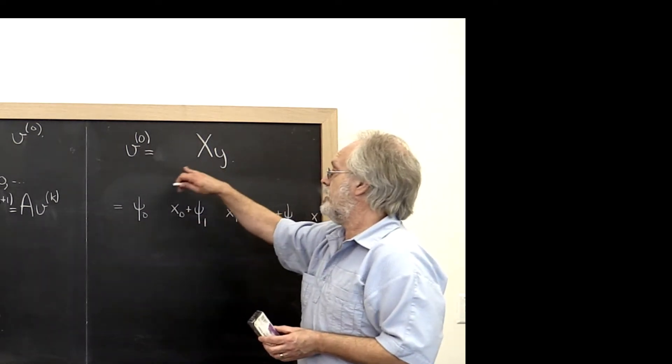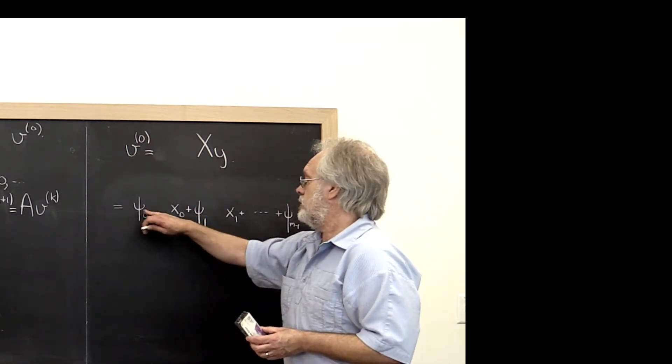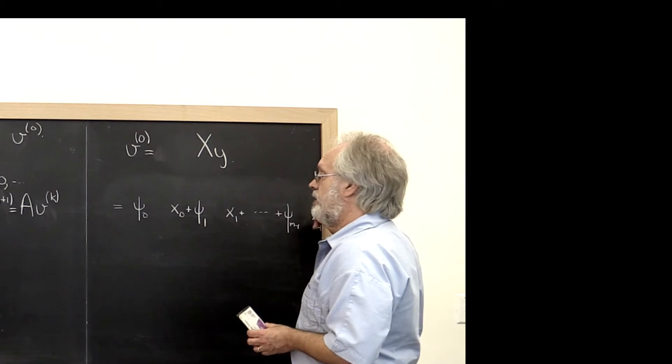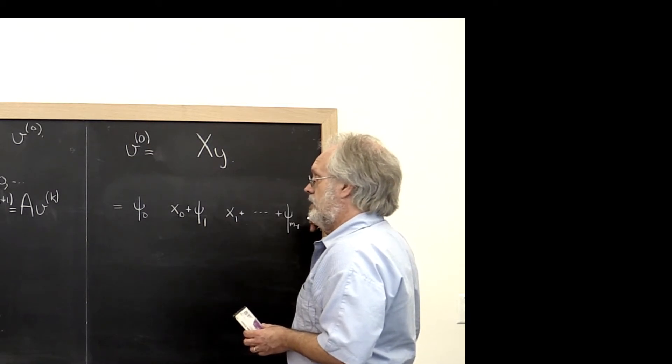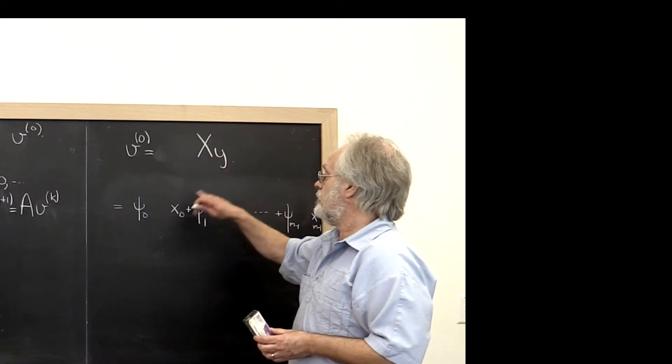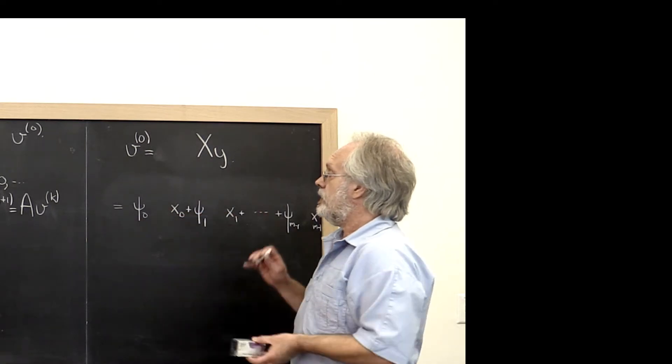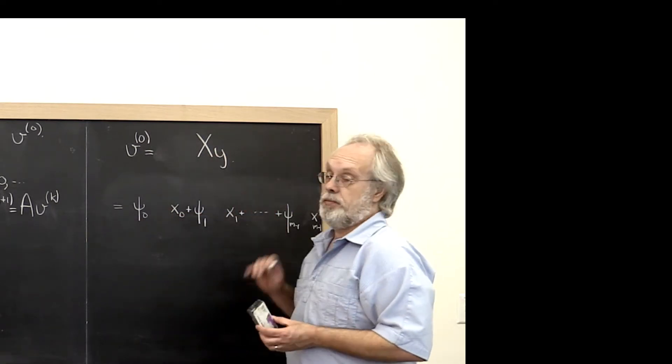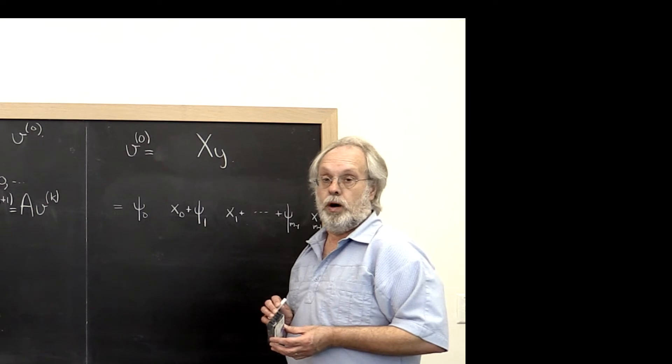In other words, we can write our vector v as a linear combination of the eigenvectors of A, where the coefficients that we use to take that linear combination are the elements of our vector y.